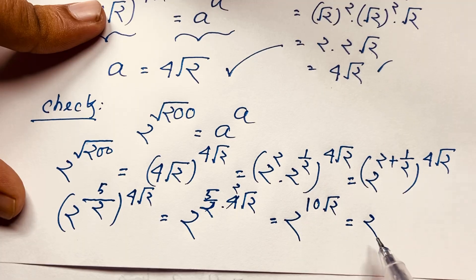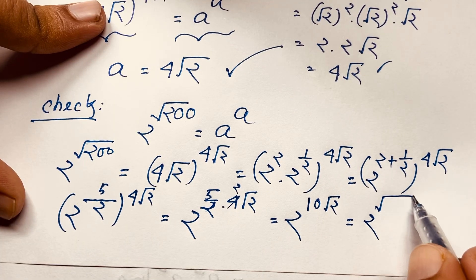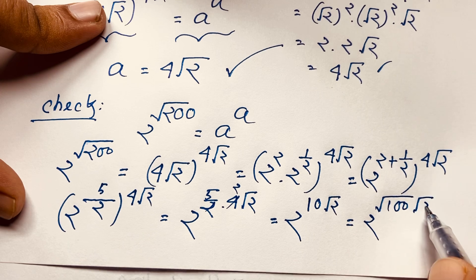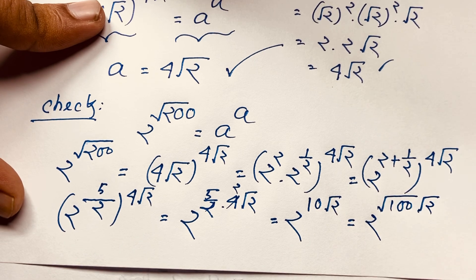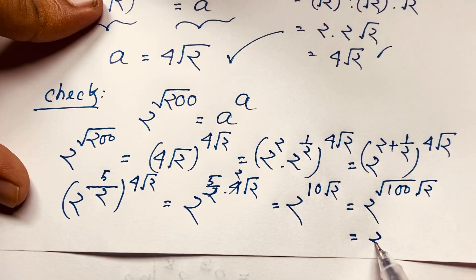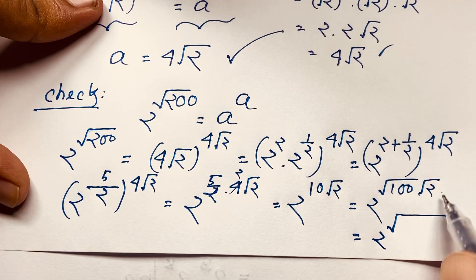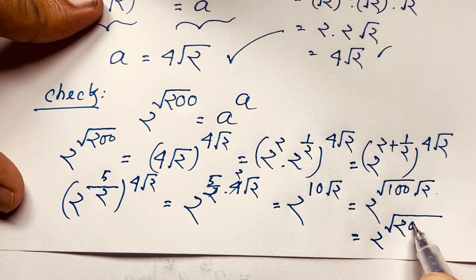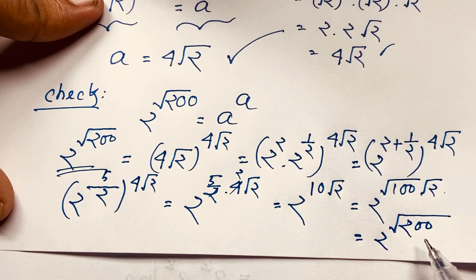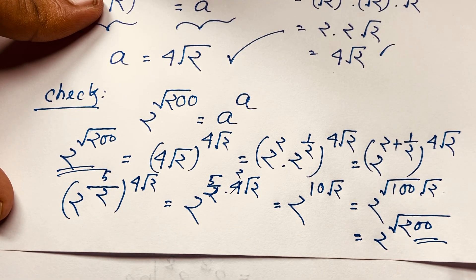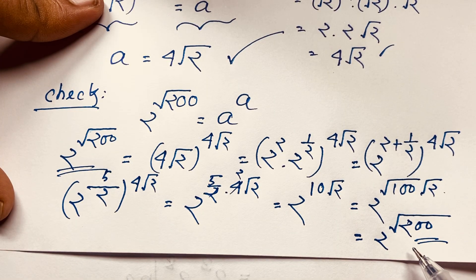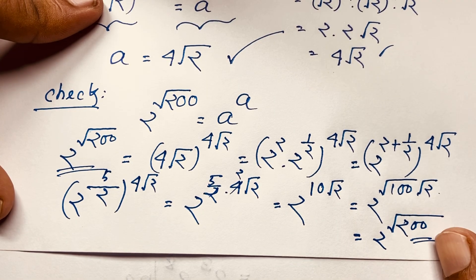Now, 2 to the power 10√2 — we rewrite 10 as √100, since √100 = 10 — giving 2^(√100 × √2). By the property √m × √n = √(mn), this equals 2^√(100×2) = 2^√200. So the left-hand side and right-hand side are both equal: 2^√200 equals 2^√200. Both sides are equal, confirming our answer.